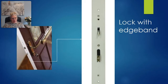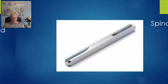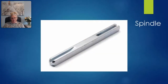Composite doors often have an edge banding to make the edge of the door look more attractive. A spindle is the square metal bar that passes through the door, connecting the handles together and operating the locking mechanism.